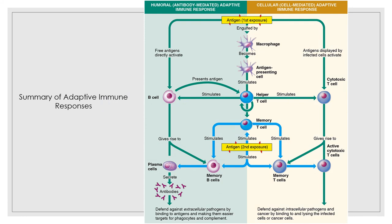This chart provides a summary of the adaptive immune responses. On the left is the humoral antibody-mediated adaptive immune response, and on the right is the cellular or cell-mediated adaptive immune response. The green arrows track the primary response and the blue arrows track the secondary response. This is a lot of information organizationally on how these different immune responses work.